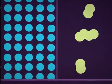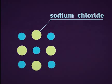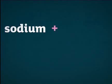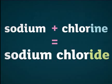Sodium and chlorine react together to produce a new substance called sodium chloride. The name of the non-metal, chlorine, changes to chloride when it forms a compound.